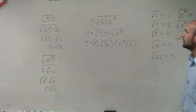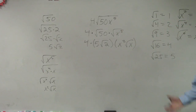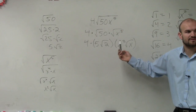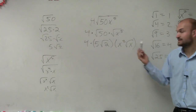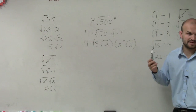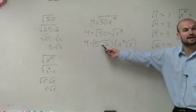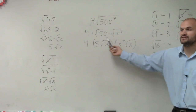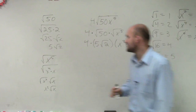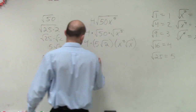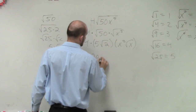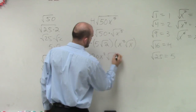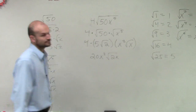Now, when you have a term inside of a root and another term inside a root, you can multiply those. And the ones outside, you can multiply those too. So you do 4 times 5 times x squared, which is 20x squared times the square root of 2x.